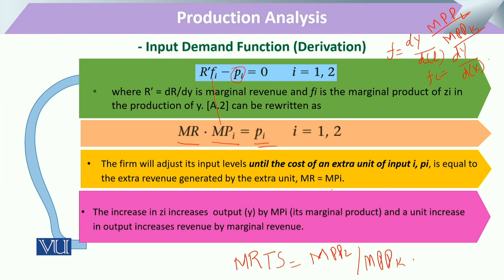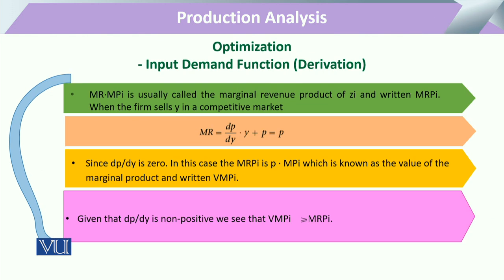An increase in input zi increases output by its marginal physical product, and a unit increase in output increases revenue by the marginal revenue. This combined effect is called the marginal revenue product (MRP) of zi. When the firm sells output y in a competitive market, we examine what happens to marginal revenue.